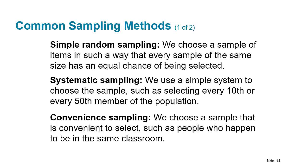Simple random sampling is the gold standard. You choose a sample such that every possible sample of the same size has an equal chance of being selected. The best way to think about it is putting names in a hat and pulling them out randomly. Everything chosen must be completely randomized.